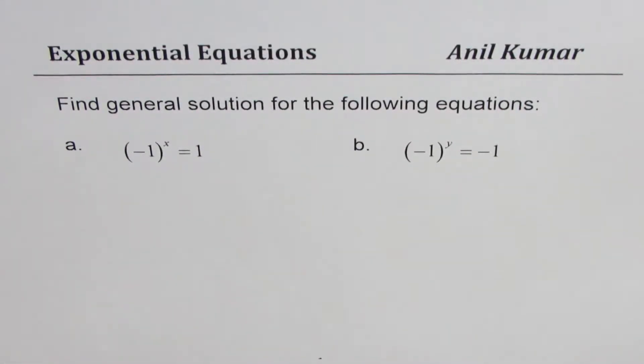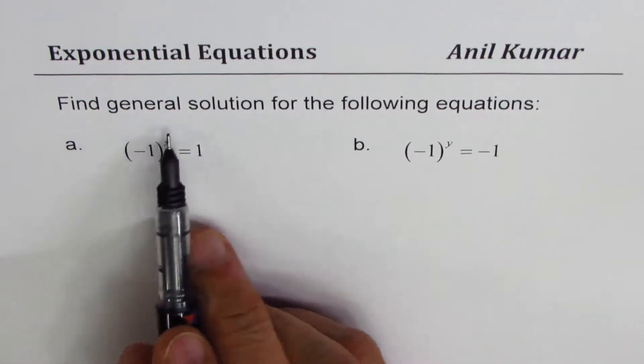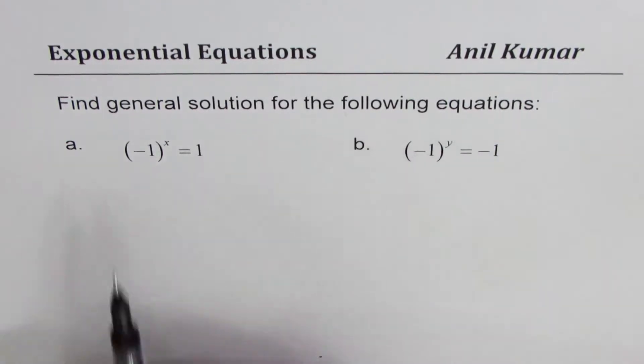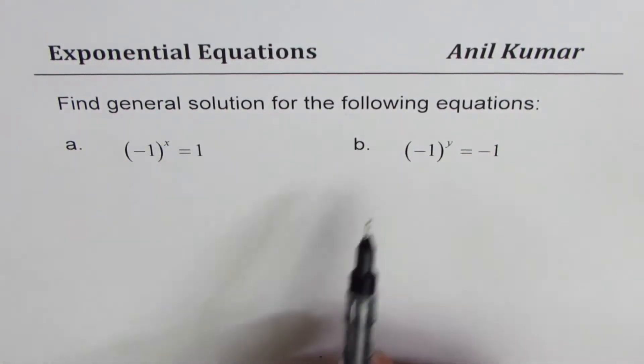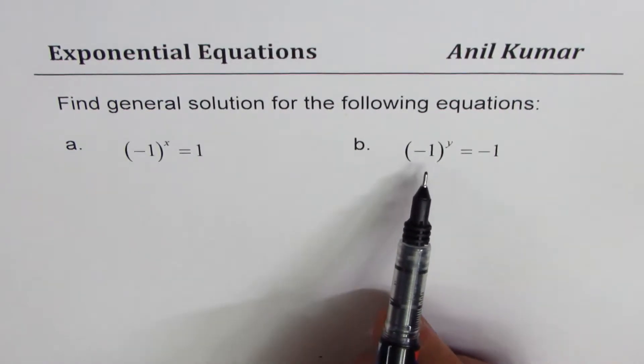I'm Anil Kumar sharing with you a very interesting question on exponential equations. Find the general solution for the following equations: a) (-1)^x = 1 and b) (-1)^y = -1.